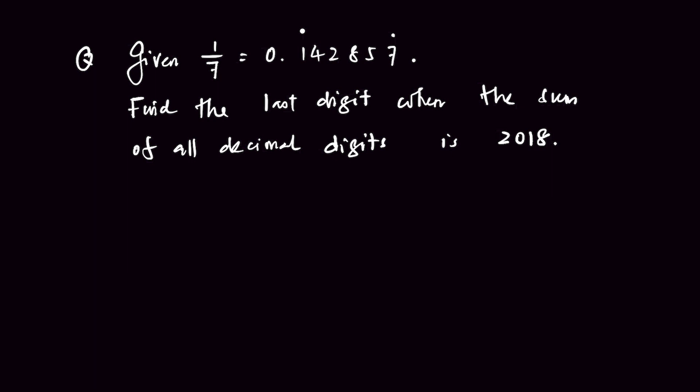Given 1 over 7 equal to 0.142857, where the two dots on top means keep on repeating. Find the last digit when the sum of all decimal digits is 2018.